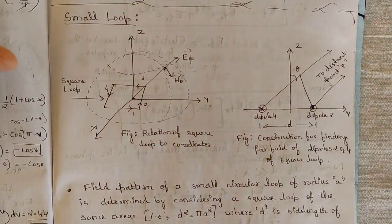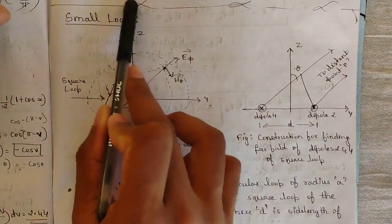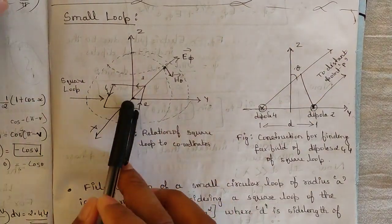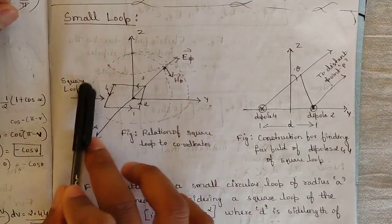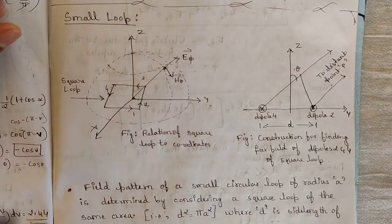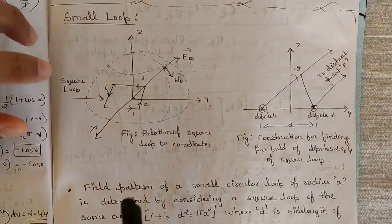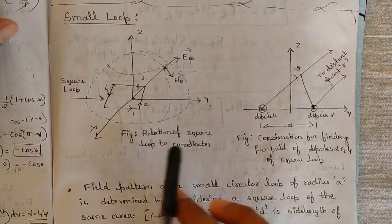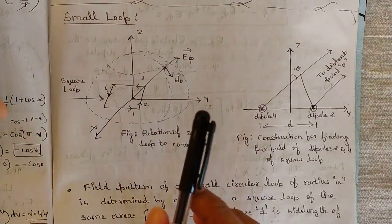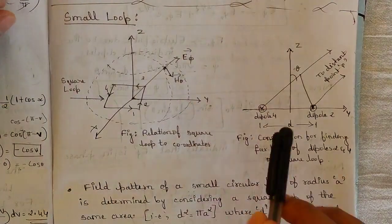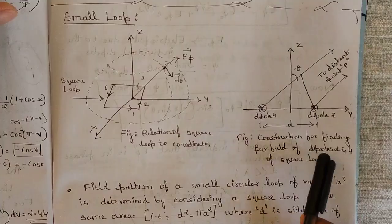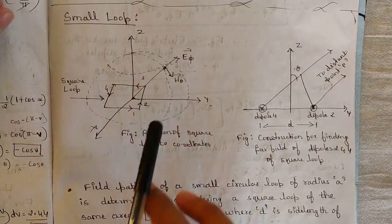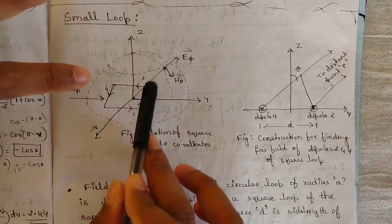One more thing to keep in mind: in this small loop, as the word suggests, we have one loop which is isotropically arranged with respect to the origin of this three-dimensional plot, and that is called a square loop. This loop is formed, and these are the four directional paths of the square loop formed with respect to the three-dimensional surface. This figure shows the relation of the square loop to all coordinates of the xyz system. The second figure shows the construction for finding the far field of dipoles 2 and 4 of the square loop.